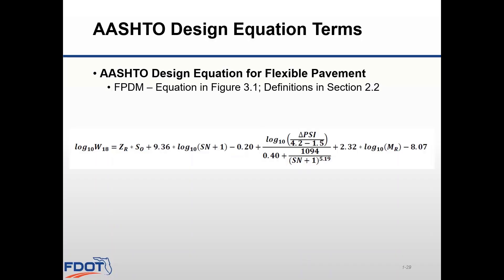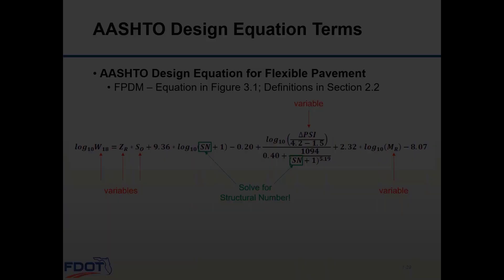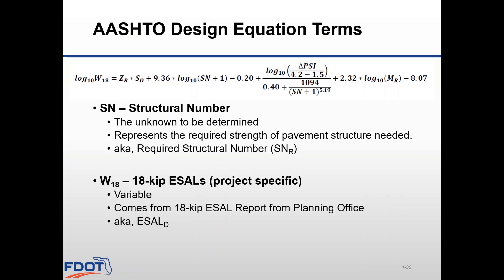Here is the 1993 AASHTO design equation for flexible pavement, found in the Flexible Pavement Design Manual in Chapter 3, Figure 3.1. All of the variables are defined in Chapter 2 of the flexible manual. There are several variables including the structural number, which is boxed out in green — this is what we want to solve the equation for. The structural number is the unknown variable representing the strength of the pavement needed for your project-specific combination of soil support, design ESALs, terminal serviceability, and environmental conditions. The W18 variable is just a different notation for the 18 KIP design ESAL, which is project specific and comes from the 18 KIP ESAL report provided by your planning office.